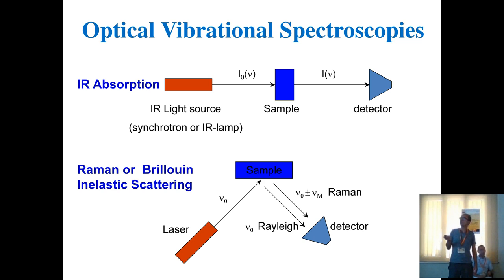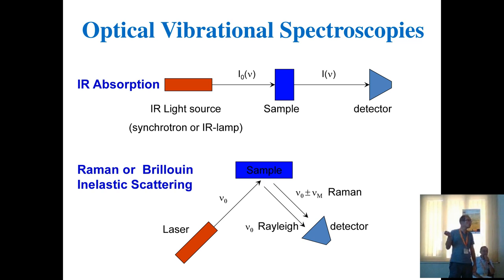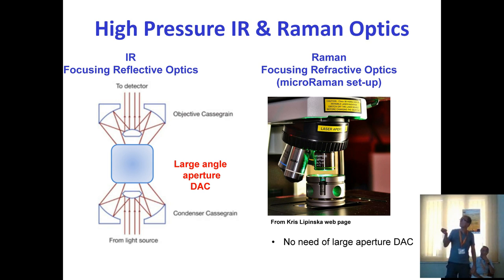In Raman scattering, you use a single wavelength — an optical or UV laser. Using UV at high pressure is difficult because of diamond absorption. You excite the sample with a laser and look at the energy of the scattered light: the elastic scattering variation. When using Raman spectroscopy, you optimize your objective for that single wavelength to minimize chromatic aberration.